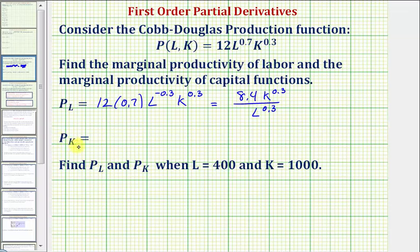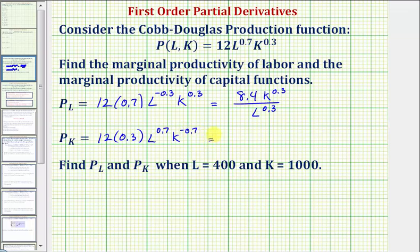Now we'll find the partial derivative with respect to K, which is the marginal productivity of capital function. We differentiate with respect to K, treating L as a constant. So we'd have 12, multiply by the exponent on K which is 0.3. L stays the same — L to the 0.7 — and for the exponent on K, we subtract 1: 0.3 minus 1 is negative 0.7. Simplifying: 12 times 0.3 is 3.6. L has a positive exponent, and the denominator would be K raised to the power of 0.7.